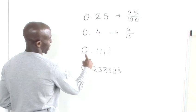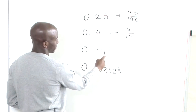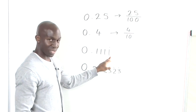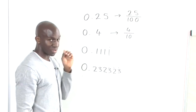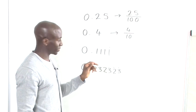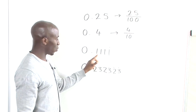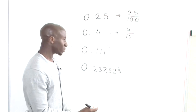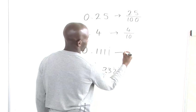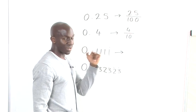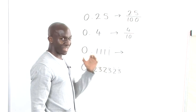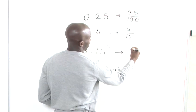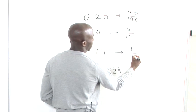Over here we have a repeated term: 0.1111. All you're looking to do is identify what the repeated term is. Here it's just 1 — the only number that has been repeated. So the fraction we're looking to use is 1 divided by 9. Nine is always the number you use with a single repeated term.